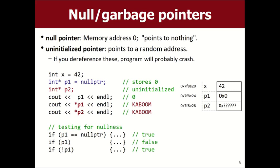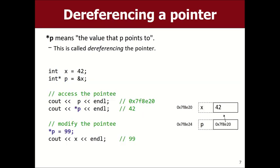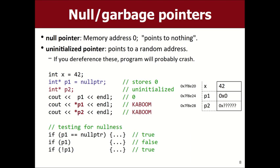Student question: can I find the variable name that a pointer points to? Unfortunately no — C++ only stores the memory address, not the variable name. The analogy: if I have GPS coordinates and there happens to be a Taco Bell there, just having those coordinates doesn't tell me it's a Taco Bell. I just know if I go there I can see what's there, but not its name.